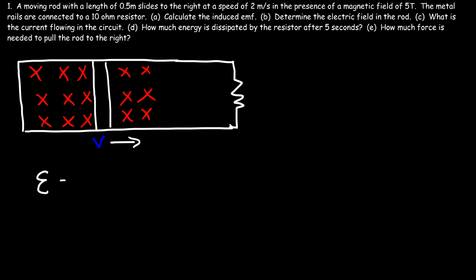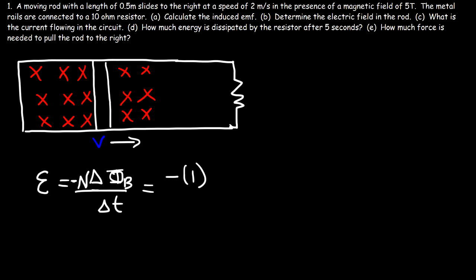Let's start with this formula. The induced EMF is equal to the change in flux divided by the change in time. There's supposed to be a negative sign and an N in the equation, but we only have a single loop, so N is really 1. As the rod moves to the right, the magnetic field is not changing; however, the enclosed area does change — it increases by delta A.